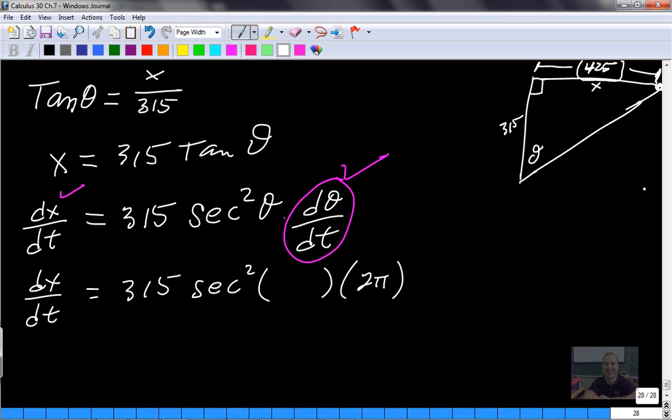Now I can use this exact value and this angle right here, and I can find theta. Alright, so we can just use a decimal. We don't have to worry about anything fancy, radicals, exact values. So again, tan of theta equals opposite over adjacent, which is 425 over 315. You guys okay with me there?